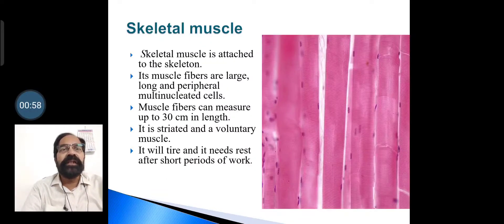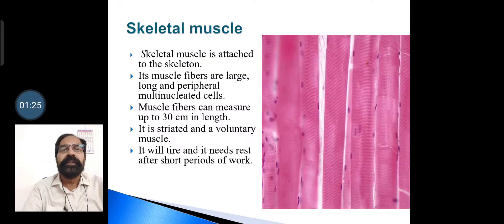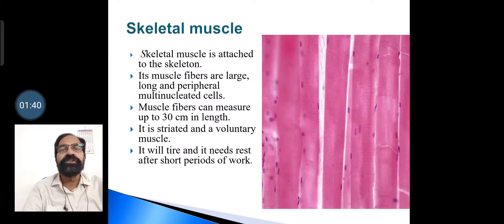The skeletal muscle is attached to the skeleton, that is, bones. Its muscle fibers are large and long; they have peripherally located nuclei and are multinucleated. Muscle fibers can measure up to 30 centimeters in length. It is a striated muscle, and by action it is a voluntary muscle. The skeletal muscle will tire and it needs rest after short periods of work.